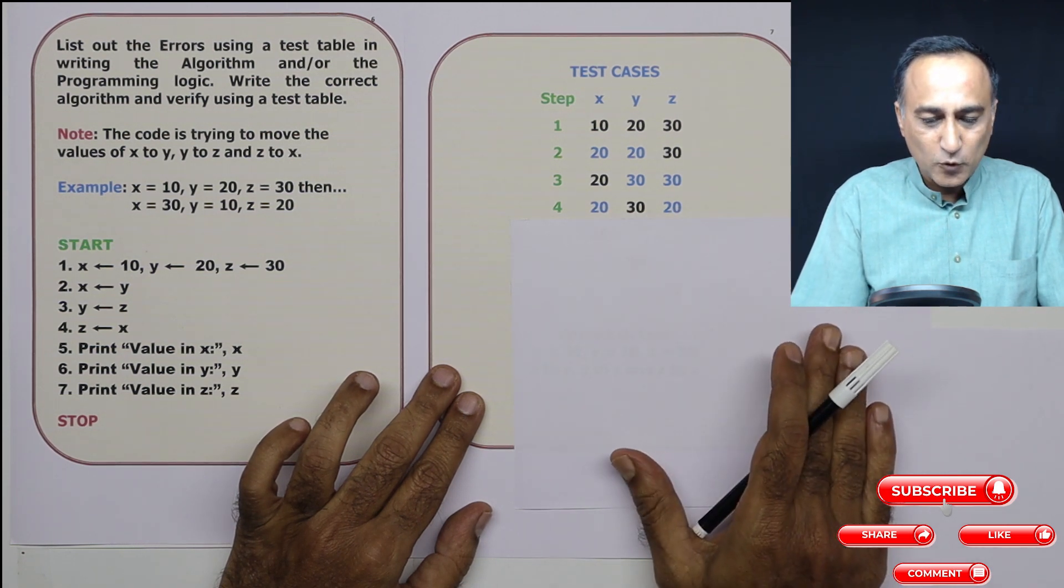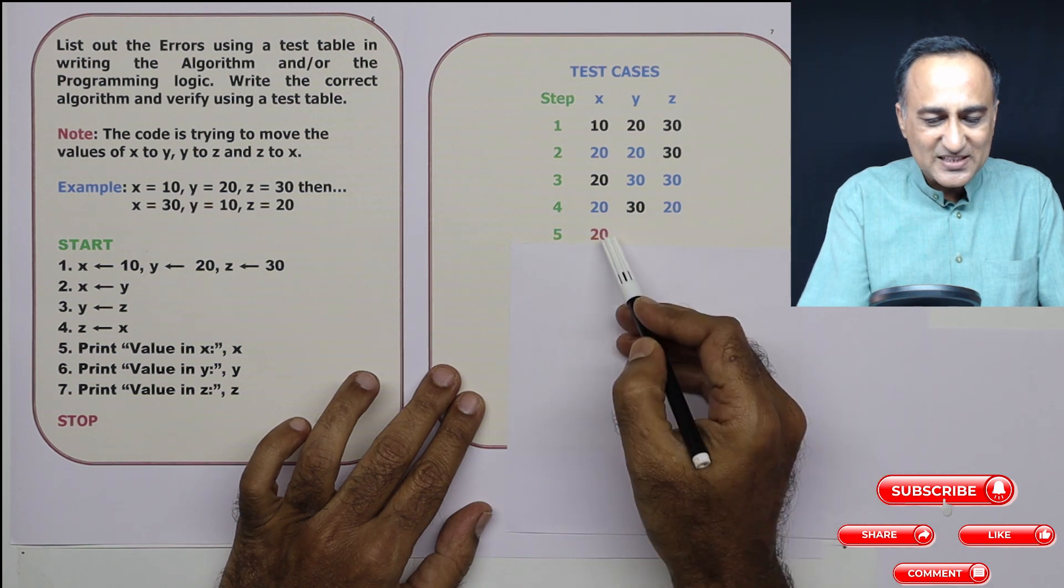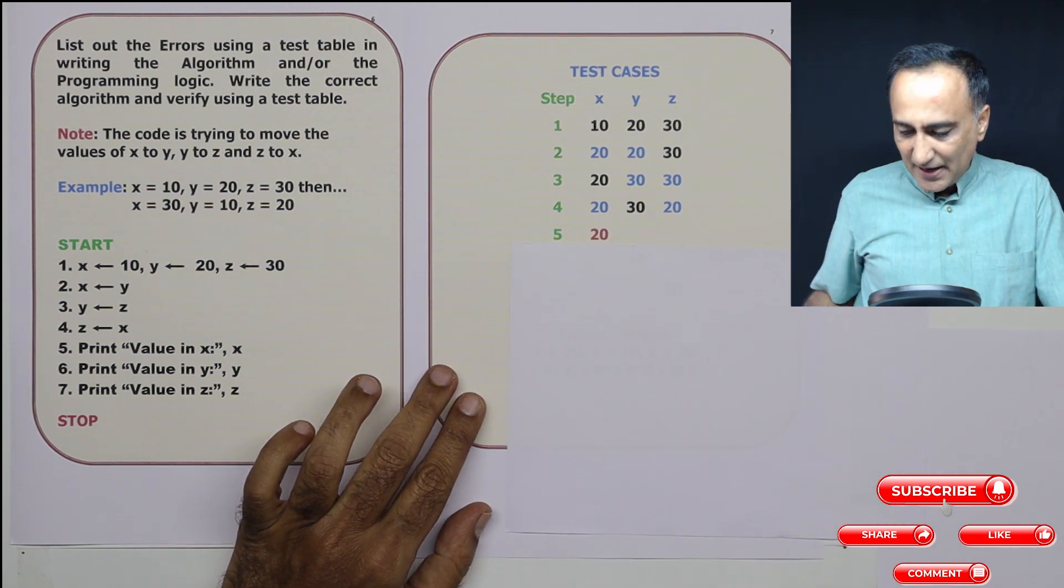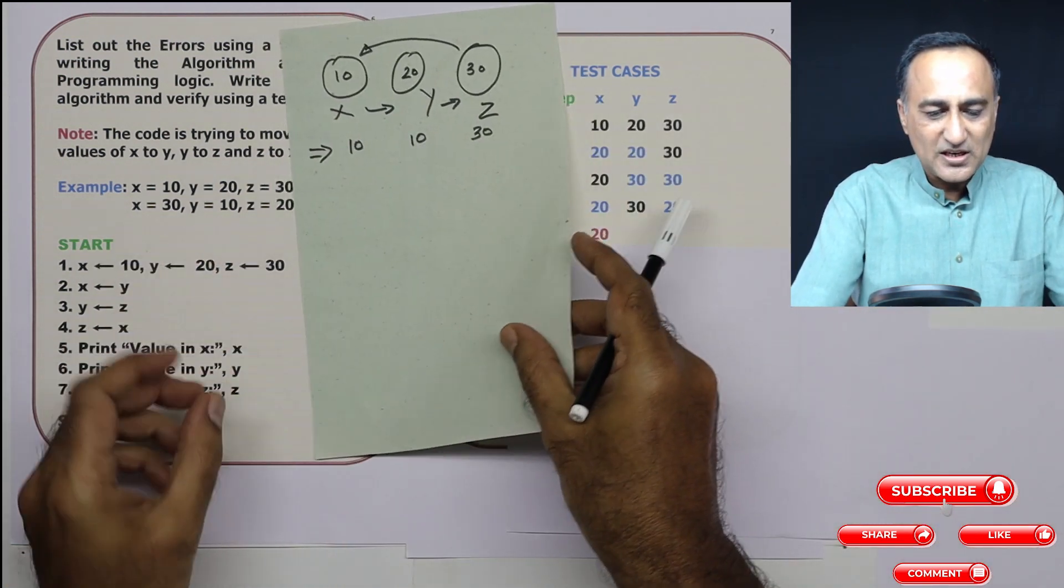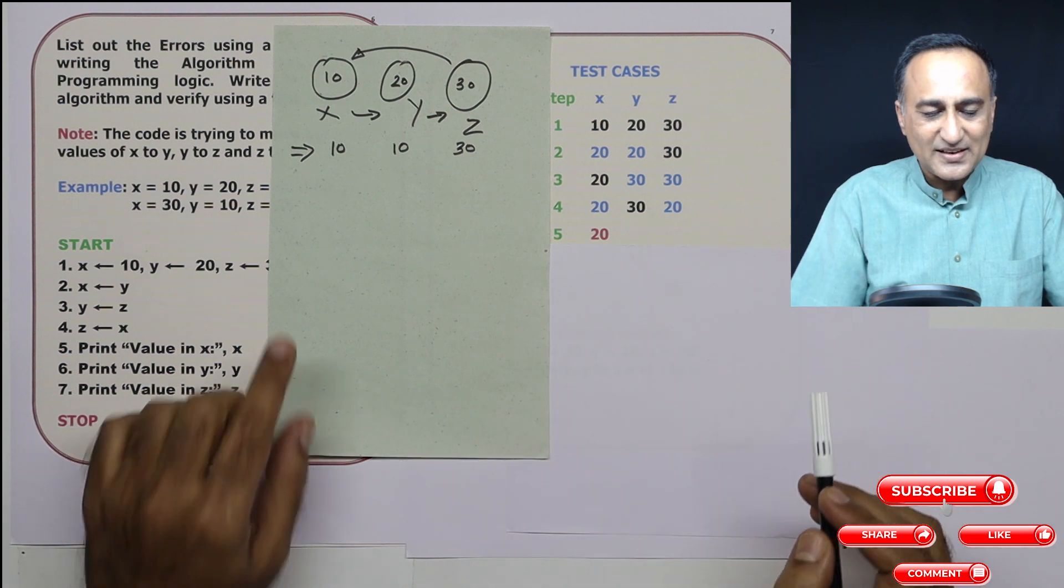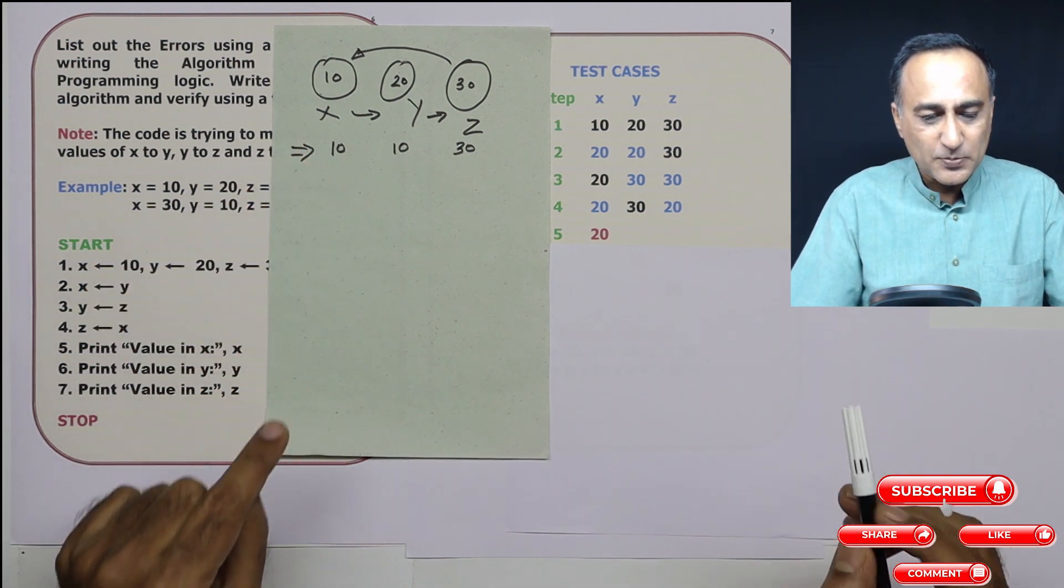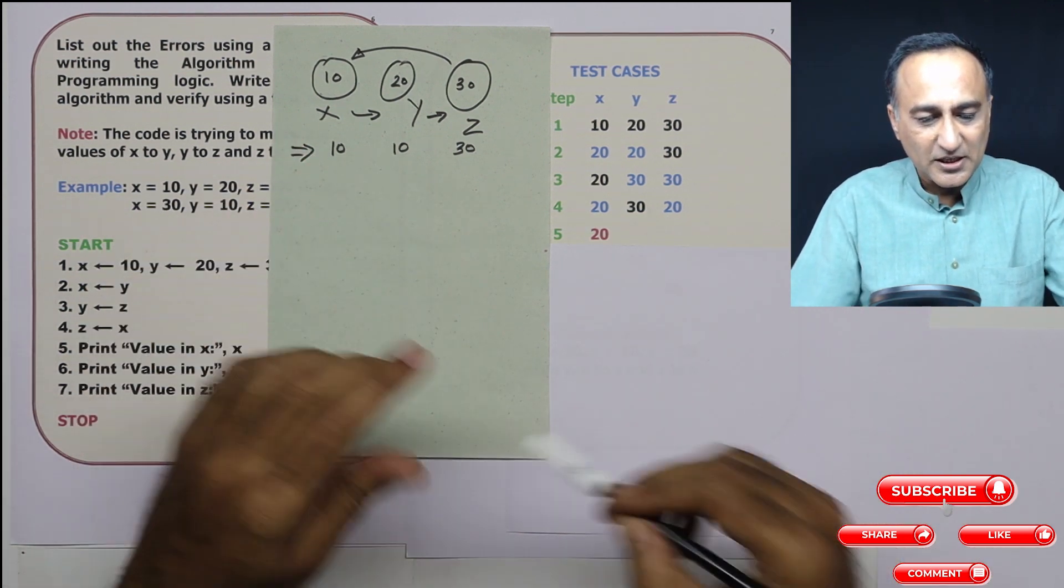So when I'm printing the value of x, it is 20. What should be the actual value of x? The actual value of x should have been, the actual value of x printed should have been 30.